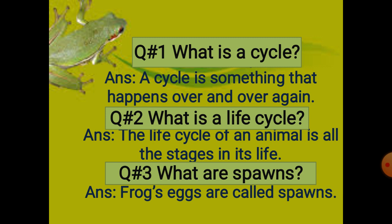The life cycle of an animal is all the stages in its life. These stages are called its life cycle. The life cycle of an animal is all the stages in its life.